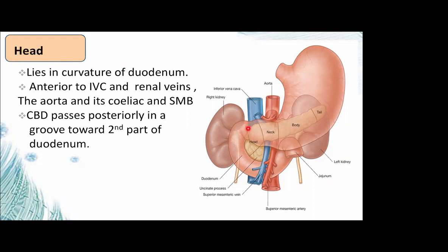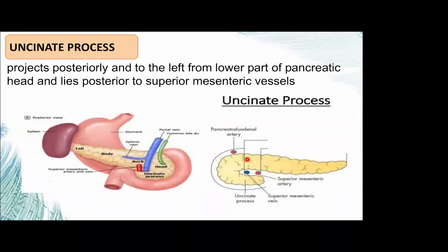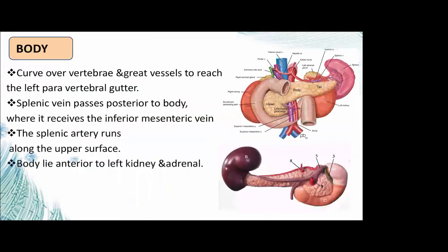The common bile duct passes posterior to the head of the pancreas. The uncinate process extends posteriorly to the left from the lower part of the pancreas head and lies posterior to the superior mesenteric vessels. The neck extends from the upper part of the head and lies anterior to the union of the splenic vein and the superior mesenteric vein to form the portal vein.